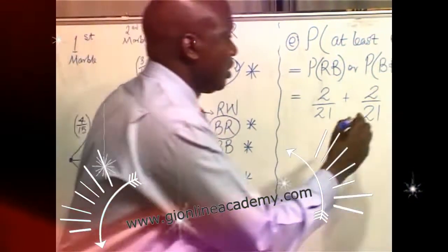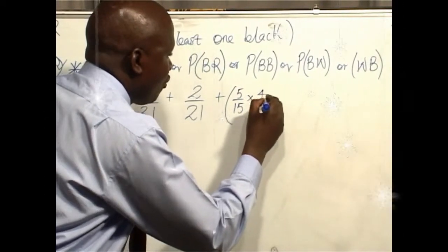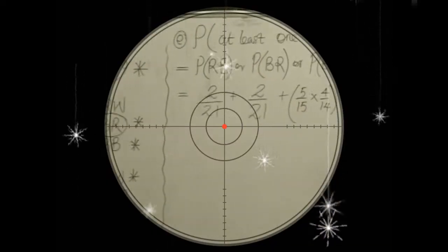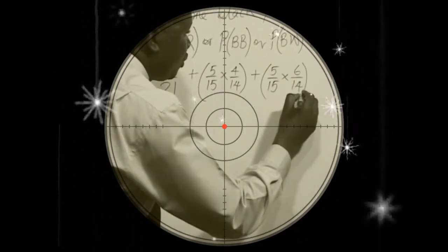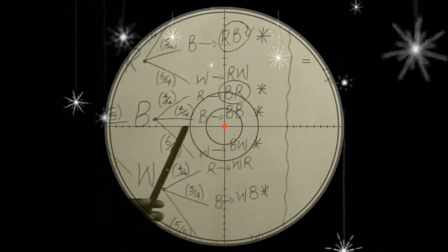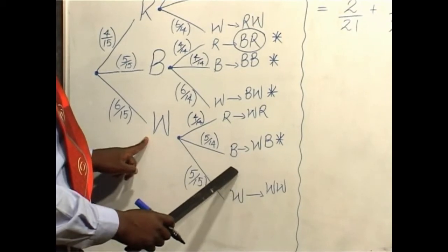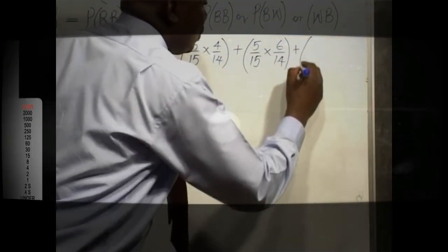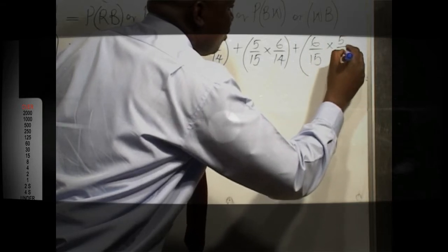We indicate 5 over 15 by 4 over 14 plus. Black followed by white is coming out as 5 over 15 multiplied by 6 over 14 plus. The last combination of at least one black is white then black, which is 6 over 15 followed by 5 over 14. So we are going to have 6 over 15 multiplied by 5 over 14.